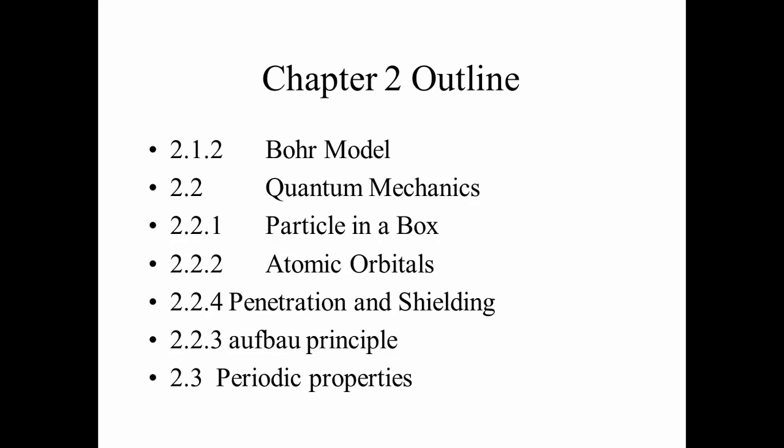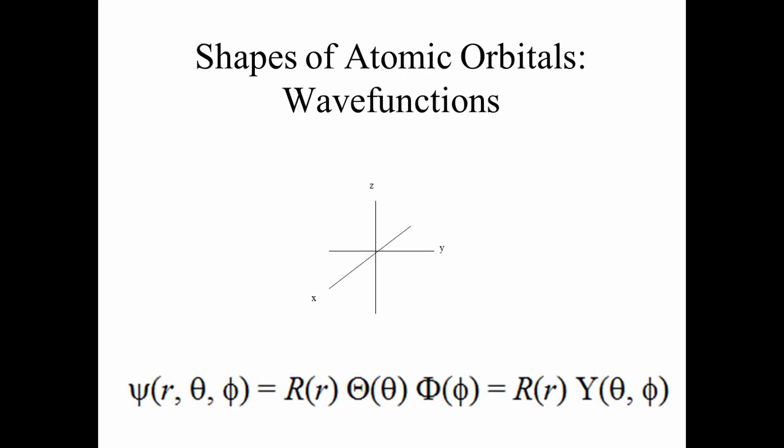Now we're going to look at a more complicated system which is the three-dimensional atom. In the atom you have an electron around a nucleus. The nucleus has the protons, the positive charge, and also neutrons. We can describe the position of the electron around the nucleus using an XYZ Cartesian coordinate system, but as we saw in the last lecture, the Schrodinger equation for that partial derivative with respect to XYZ is complicated.